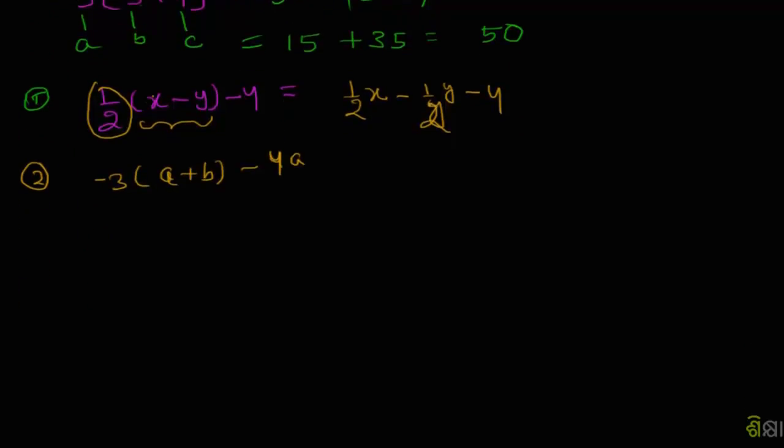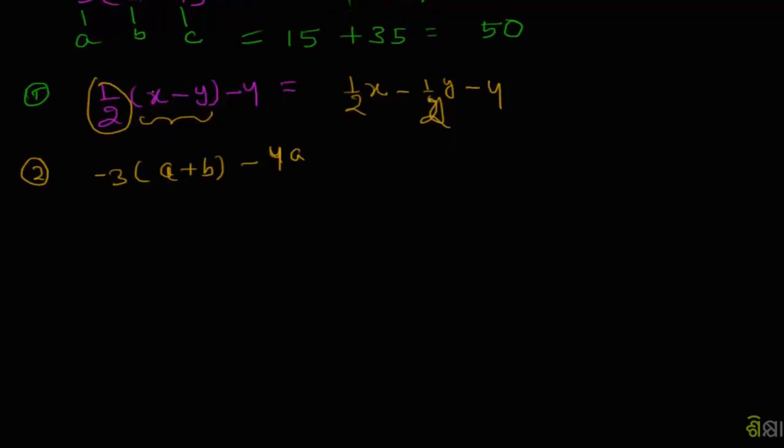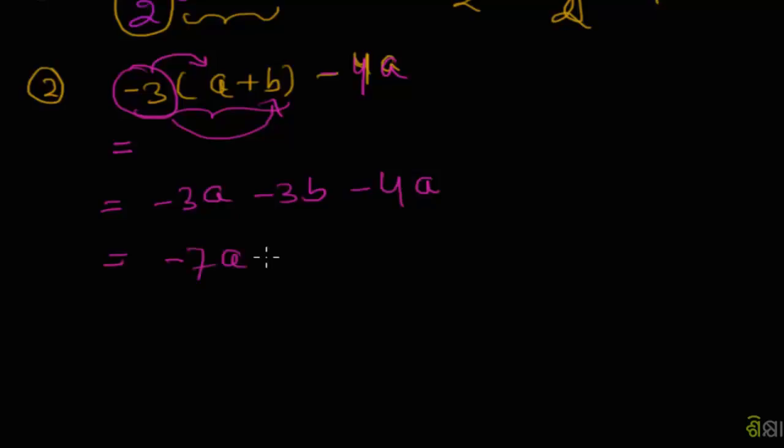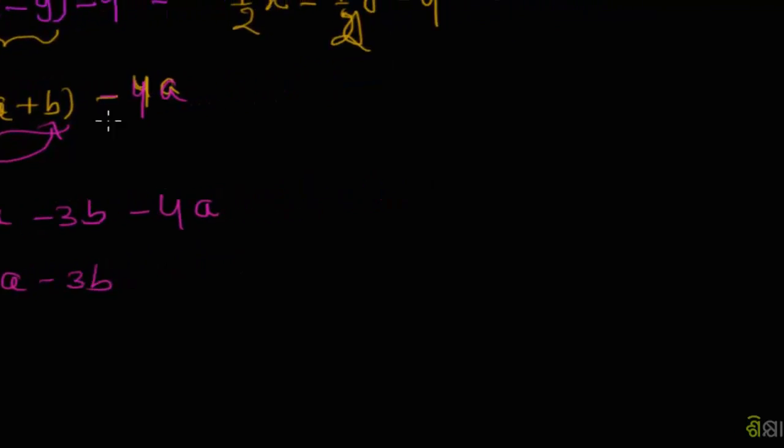Problem 2: -3(a+b) - 4a. We expand by multiplying: -3 times a equals -3a, -3 times b equals -3b, minus 4a. This simplifies to -7a - 3b.